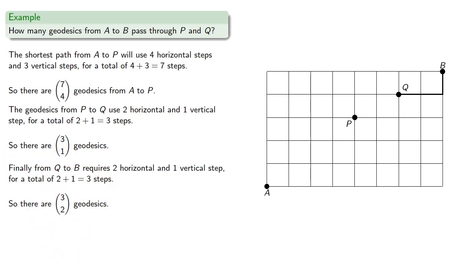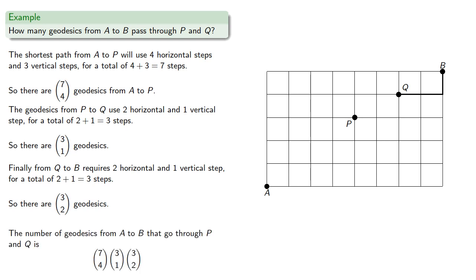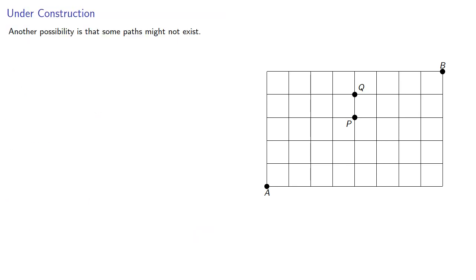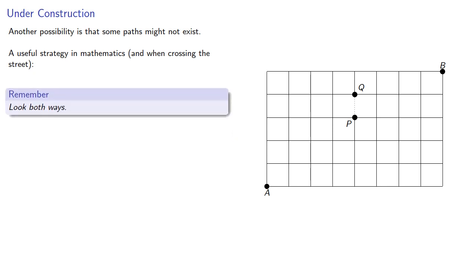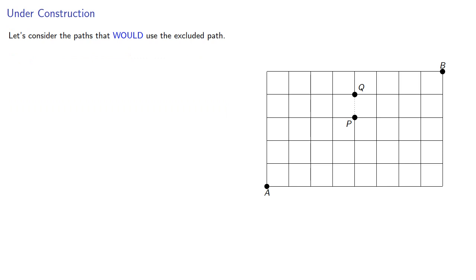Using the multiplication principle, the number of geodesics from A to B that go through both P and Q can be computed. Another consideration is that some paths might not exist — a useful strategy in mathematics, and when crossing the street, is to look both ways. So let's consider the paths that would use an excluded segment; the only path that would use the excluded line would go through P and then on to Q.